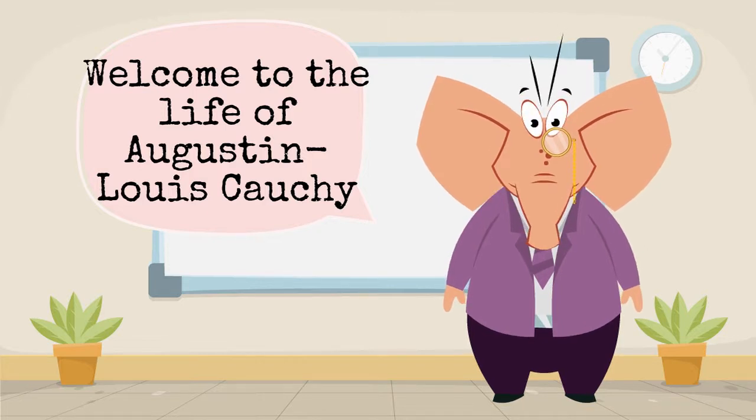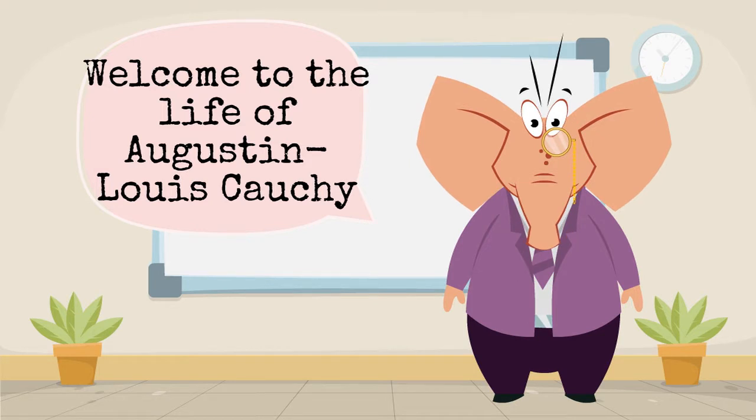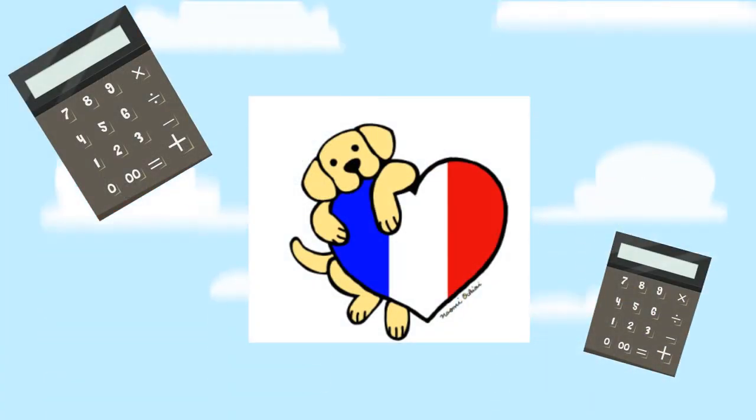Welcome to the life of Augustine Louis Cauchy. Augustine Louis Cauchy was born on August 21st, 1789 in Paris, France. He was a French mathematician who pioneered analysis and the theory of substitution groups. He was considered to be one of the greatest modern mathematicians.